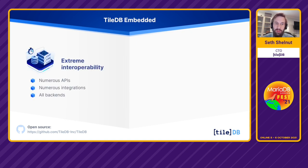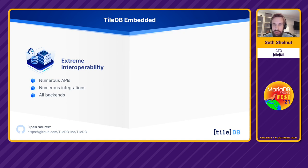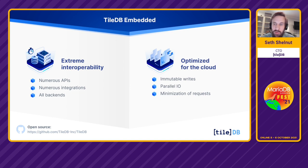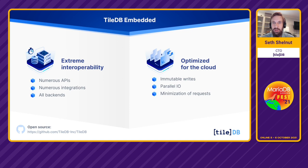We have a number of APIs — Python, R, Java, C++ — and integrations with domain-specific tools like GDAL and PDAL, more generic tools like Presto and Spark, and of course MariaDB. We support a large number of backends: POSIX file systems, object stores like S3 or Azure Blob Store, and shared file systems like LustreFS or NFS. Because of our immutable writes, we're completely optimized for the cloud. The LSM-like tree structure works very well for cloud object stores, and we optimize for parallel I/O to minimize requests, given that object stores have latency and minimum boundaries for requests.